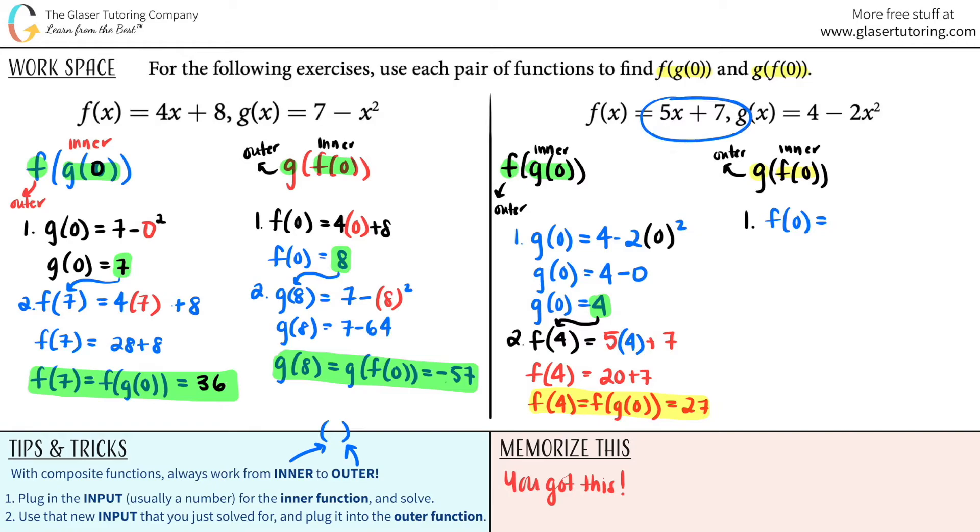Any time I see an x value, I'm plugging in a 0. So 5 times 0 plus 7. Do the math. f of 0, we got this one right. 5 times 0 is 0 plus 7 is just a 7.